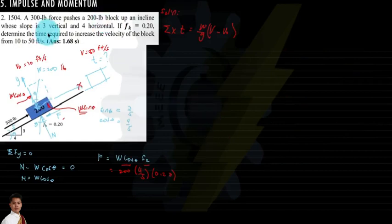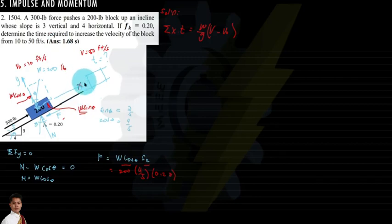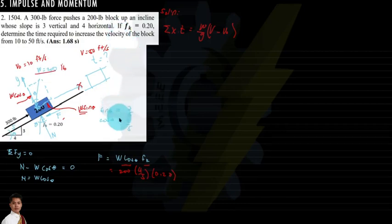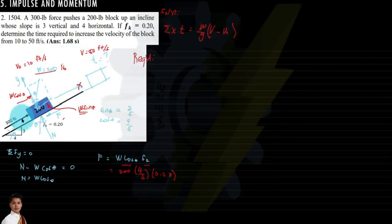Next problem 1504: a 300-pound force pushes a 200-pound block up an incline whose slope is 3 vertical and 4 horizontal. If f-sub-k is 0.2, determine the time required to increase the velocity of the block from 10 to 50 feet per second. The direction of motion is up the incline, so the x-axis is placed along the incline with positive direction upward.